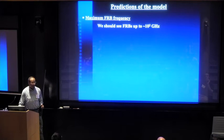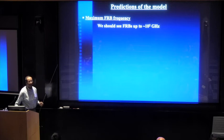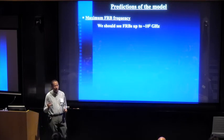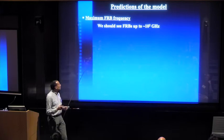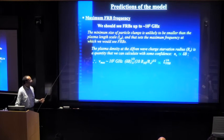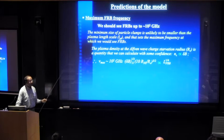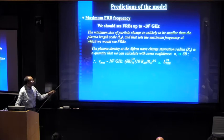Some predictions. So maximum of FRB frequency - that is set by the size of these clumps, which is in turn set by the plasma frequency. So according to this model, we shouldn't see FRBs at frequencies greater than approximately 100 gigahertz or so. That's the limit set by the plasma length scale.